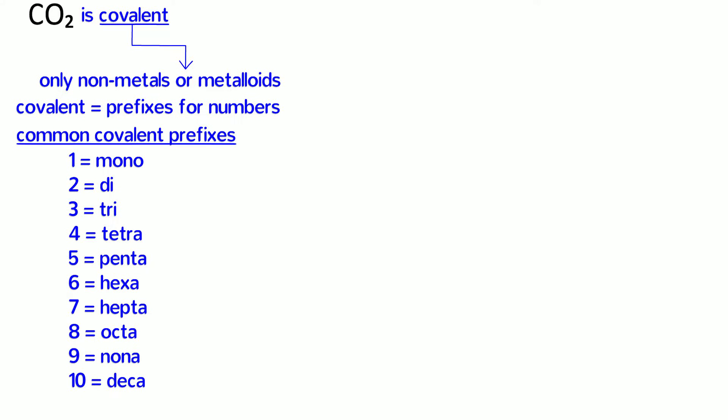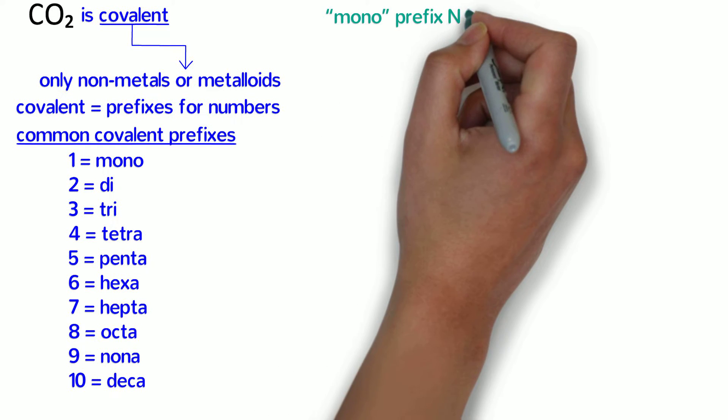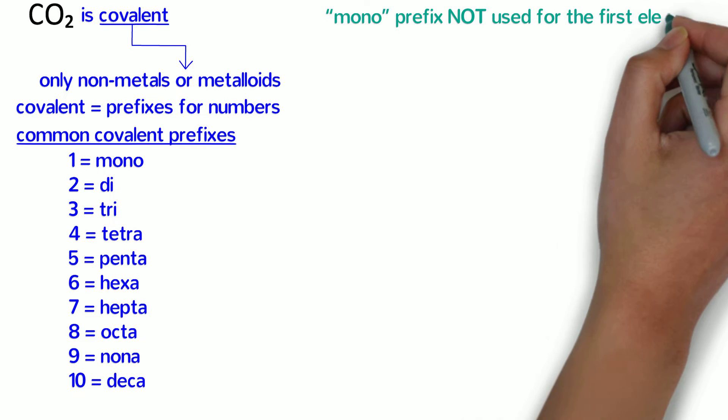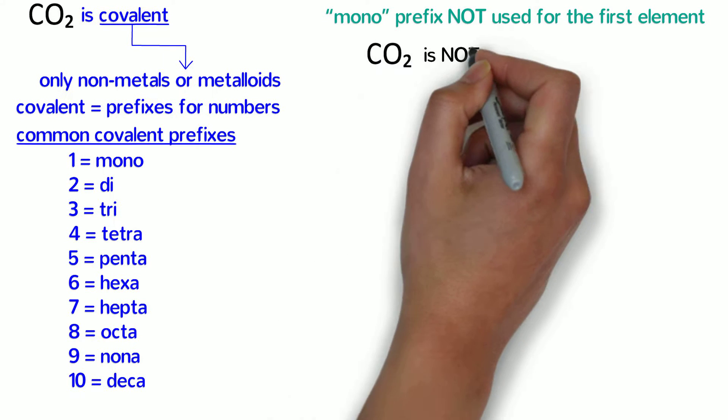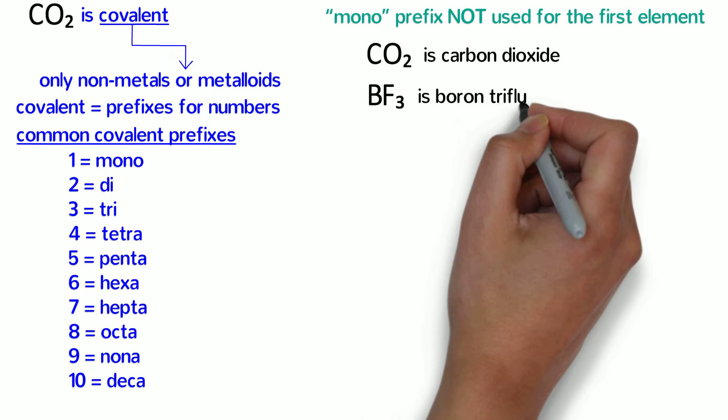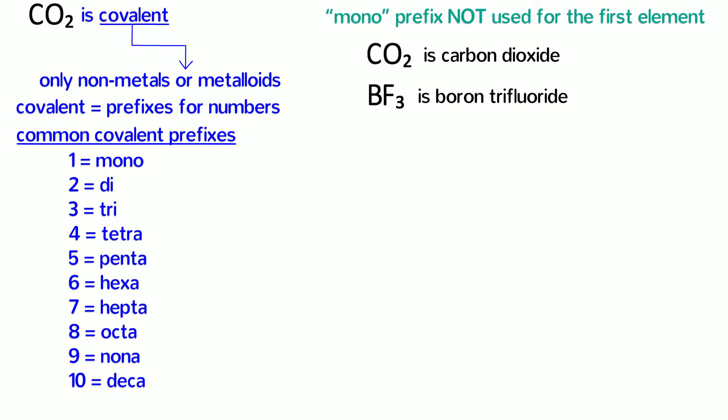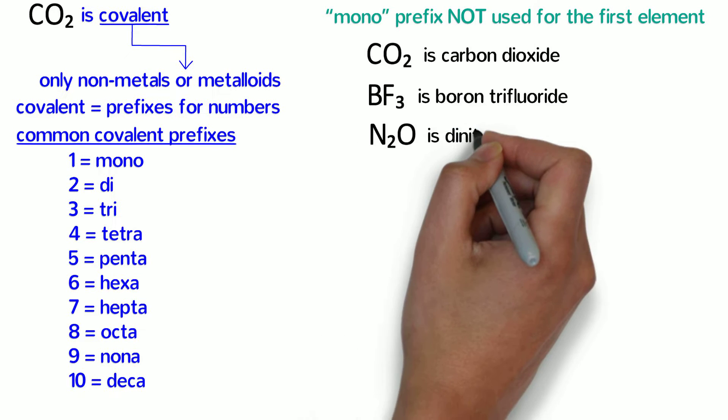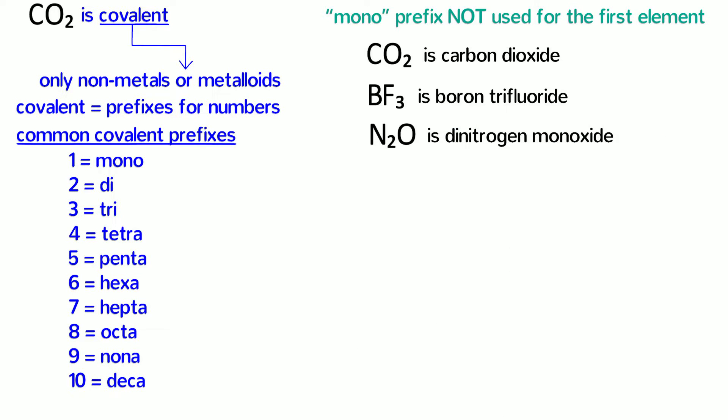Before we look at more examples, we should notice that the mono prefix for 1 is not used for the first element. CO2 is not monocarbon dioxide, but simply carbon dioxide. In the same way, BF3 is boron trifluoride. The mono prefix is not used for the first element. However, mono is used for the second element. For example, N2O is dinitrogen monoxide. In that case, there's a prefix for both elements.